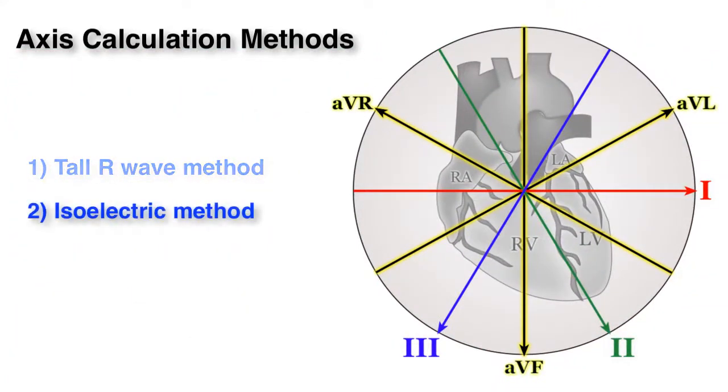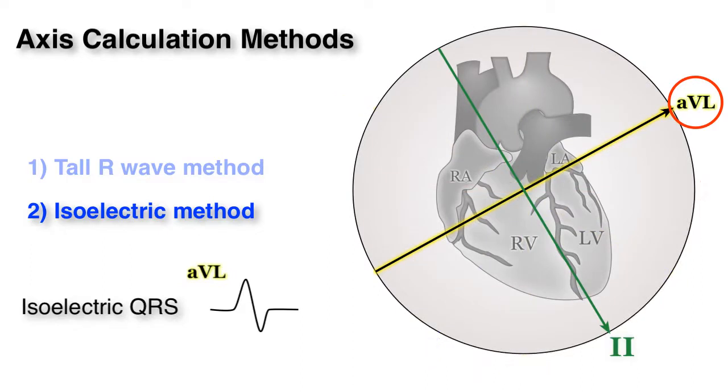Second, the isoelectric method. Identify a lead in which the QRS is precisely isoelectric. The mean QRS axis will be pointed perpendicularly to that lead. Sounds complicated, but let's go back on this EKG.